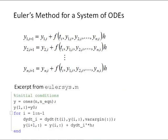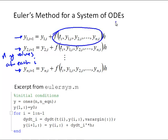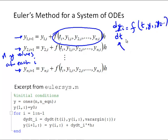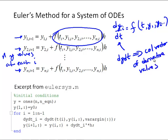Let's look at expanding Euler's method for a system of ordinary differential equations. Basically, if we have n equations, we'll have n y values that we're solving for at each time step. For each one, we will evaluate the function dy/dt, where yi is equal to some function of t, y1, y2, etc. We've written some function to return that — an anonymous function in our MATLAB code — a function dy/dt that returns a column vector of derivative values. Let's look at how that works in an m-file to implement Euler's method.